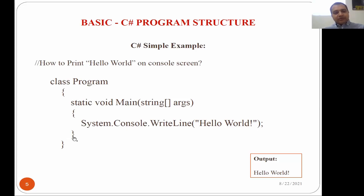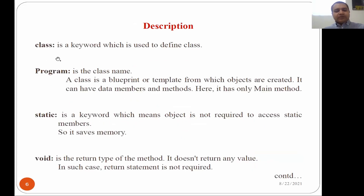Whatever string you type within double quotes will be printed directly on the screen. Then you close the main body and close the class. We have used keywords like class, static, void, and system. Now, for the description: class is a keyword used to define a class. Program is the name of the class. A class is a blueprint or template from which objects are created — it can have data members and methods.